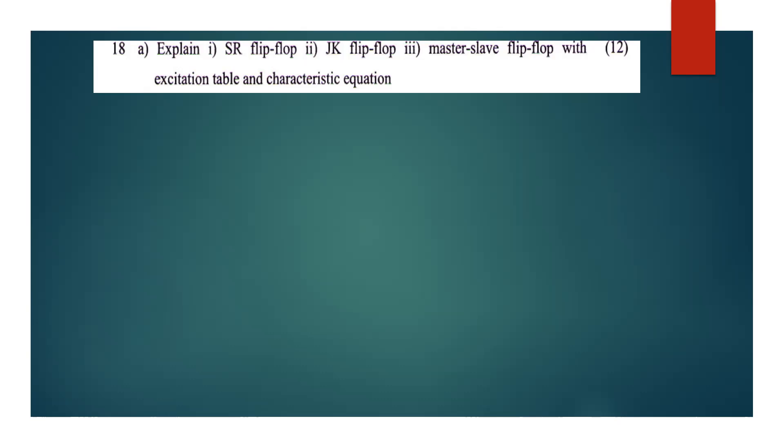For the master-slave flip-flop, I think there are four questions in the textbook — from the fourth and fifth modules. In the 5th module, we have a counter, a Johnson counter. There is a lot of designing and problems. Questions refer to Anand Kumar, Thomas Floyd, and Digital Fundamentals.